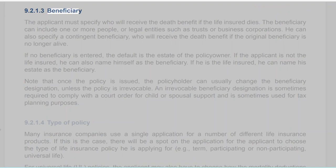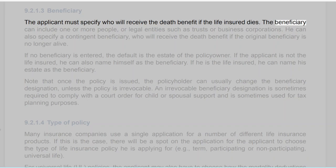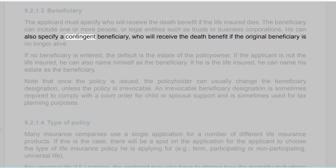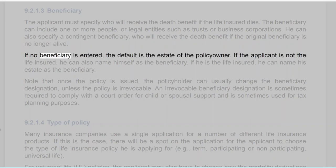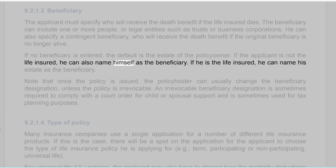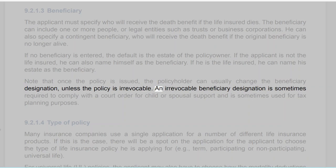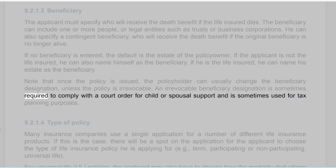Section 9.2.1.3: Beneficiary. The applicant must specify who will receive the death benefit if the life insured dies. The beneficiary can include one or more people or legal entities such as trusts or business corporations. He can also specify a contingent beneficiary who will receive the death benefit if the original beneficiary is no longer alive. If no beneficiary is entered, the default is the estate of the policyowner. Once the policy is issued, the policyholder can usually change the beneficiary designation unless the policy is irrevocable. An irrevocable beneficiary designation is sometimes required to comply with a court order for child or spousal support and is sometimes used for tax planning purposes.